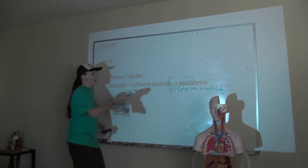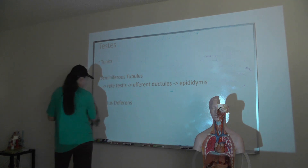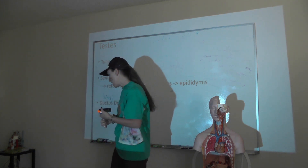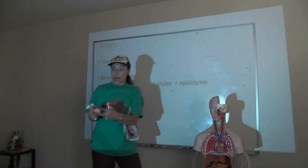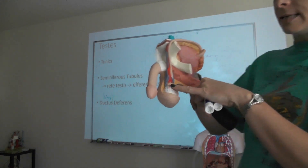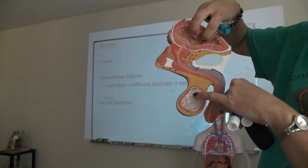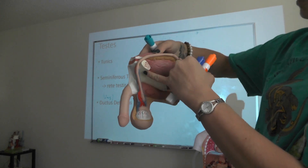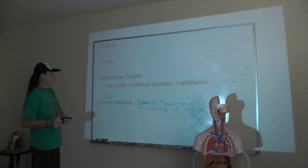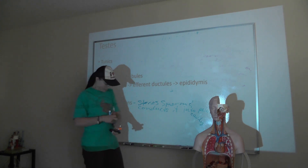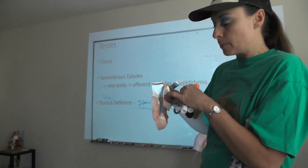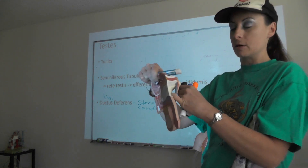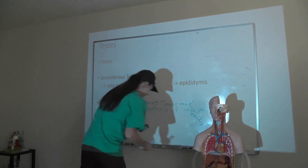From the epididymis, activated sperm enter the ductus deferens, also called the vas deferens. If you've heard of a vasectomy, that's the procedure in which the ductus deferens is cut and tied off so sperm cannot enter the pelvic cavity. The ductus deferens is part of the spermatic cord that comes through the inguinal canal, containing the ductus deferens along with arteries, veins, lymphatics, and nerves that serve the testis.